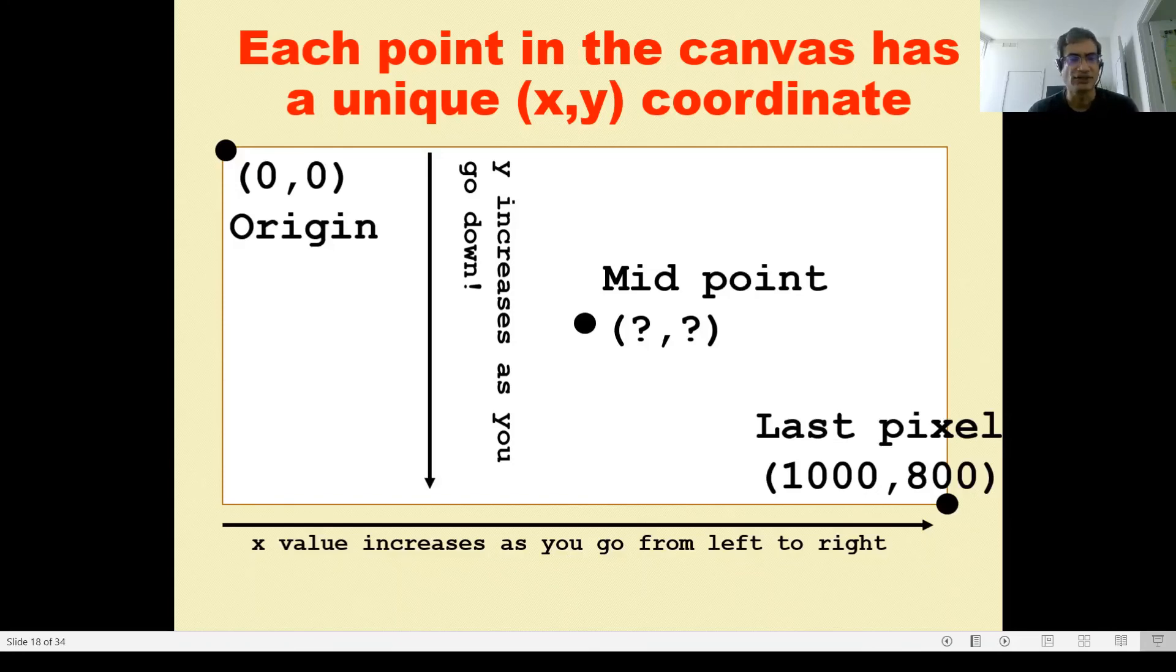The midpoint, let's work it out. It's going to be my whole width divided by 2, so it'll be 500. And my height, 800 divided by 2, so it should be 500 comma 400, and that refers to that one particular point.